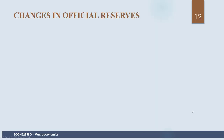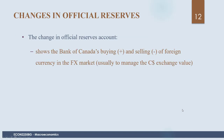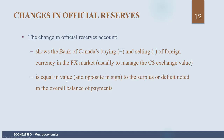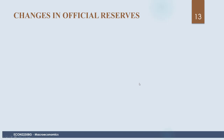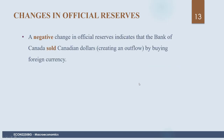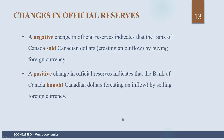The change in official reserves account shows the Bank of Canada's buying and selling of foreign currency in the foreign exchange market, usually to manage the Canadian dollar's exchange value. It is equal in value and opposite in sign to the surplus or deficit in the overall balance of payments. A negative change in official reserves indicates the Bank of Canada sold Canadian dollars (creating an outflow by buying foreign currency), while a positive change indicates it bought Canadian dollars (creating an inflow by selling foreign currency).